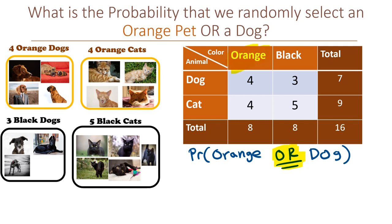If we think it through, let's highlight all the orange pets. Then let's highlight all the dogs. How many are there that are either orange or a dog? 4 plus 4 plus 3 equals 11. Out of the total number of pets in the sample, 16. So 11 out of 16 is the answer.